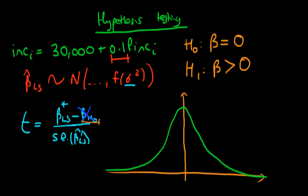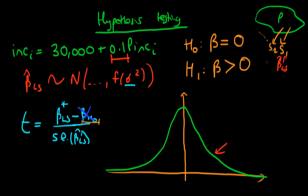Remember what we're trying to do here: we have some population, and if we took repeated samples S1, S2, and so on for a long time, and used our least squares estimators on each of those samples to construct a t-statistic, it would turn out that the sampling distribution for this t-statistic follows what we call a t-distribution. Under the null hypothesis, it would be centered around zero.